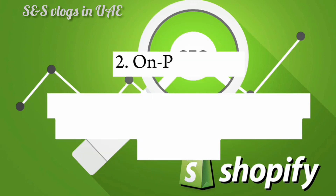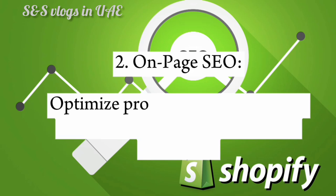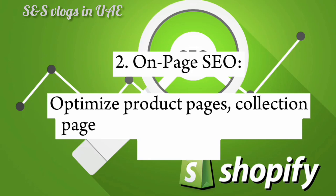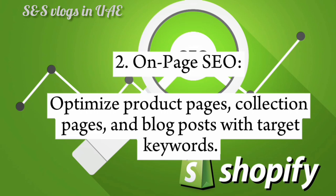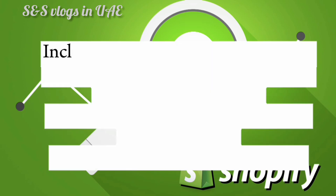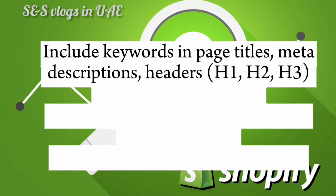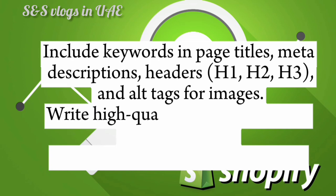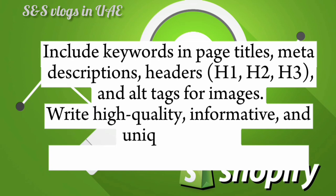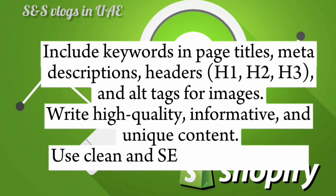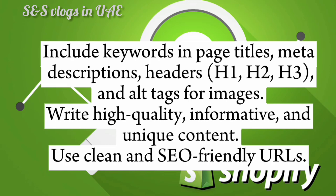2. On-page SEO. Optimize product pages, collection pages, and blog posts with target keywords. Include keywords in page titles, meta descriptions, headers (H1, H2, H3), and alt tags for images. Write high-quality, informative, and unique content. Use clean and SEO-friendly URLs.